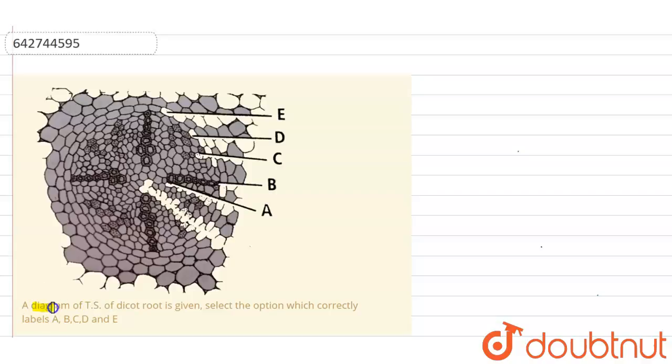is a diagram of TS of dicot root, that is transverse section of dicot root, is given. Select the option which correctly labels A, B, C, D and E. Some distinguishing features of dicot root: the vascular bundles are less, about 5 to 6, and the pith is absent.